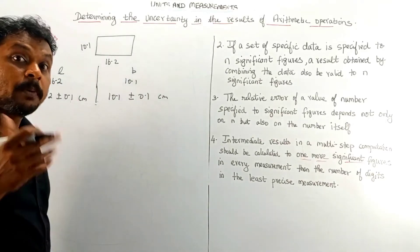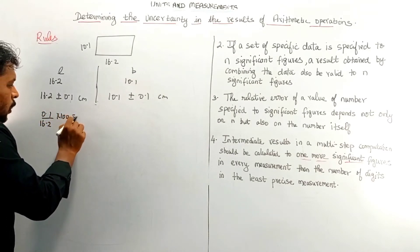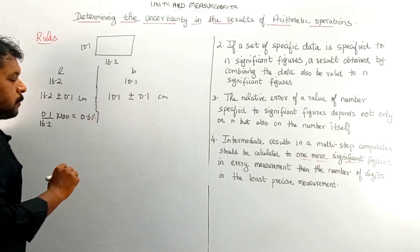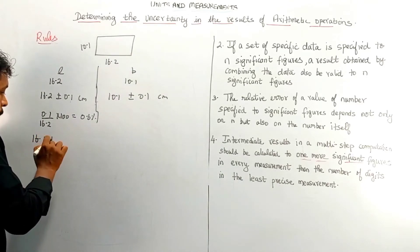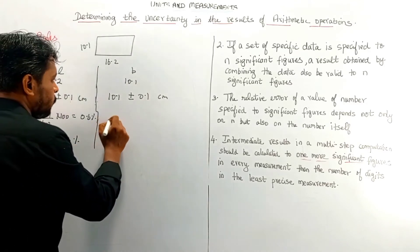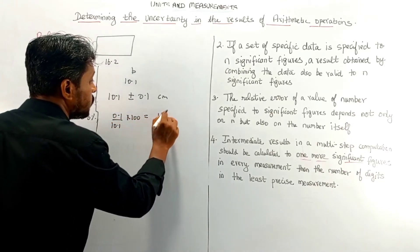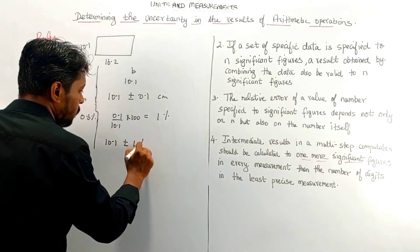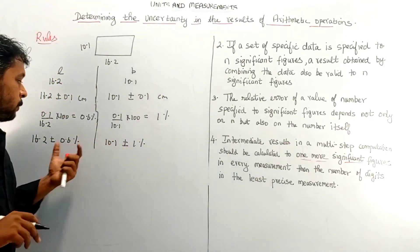Now I am going to represent the error with percentage. For length: 0.1 divided by 16.2 into 100 gives 0.6 percent. So the length is represented with ±0.6 percent. Similarly for breadth: 0.1 divided by 10.1 into 100 gives 1 percent. So the breadth is represented with ±1 percent. I have now represented the length and breadth with percentage errors.